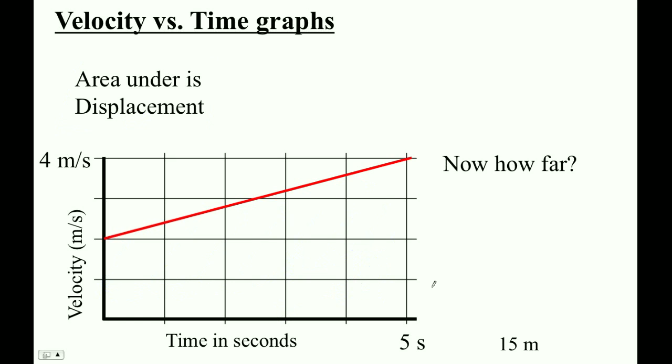Well, how do you find that area? This area here is a rectangle. There's a rectangle there and a triangle. So the area of this part here is one-half base height. The base is five and the height is two. So it's one-half five seconds times two meters per second. Which is, let's see, five times two is ten. Half of ten is five.